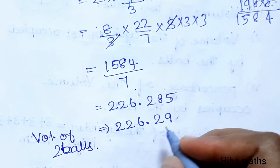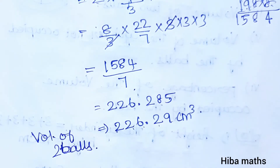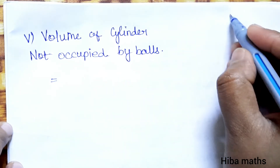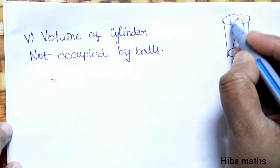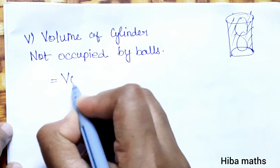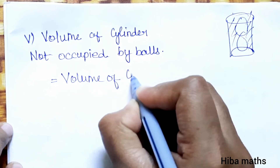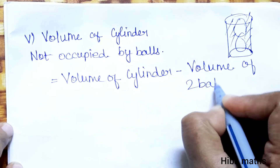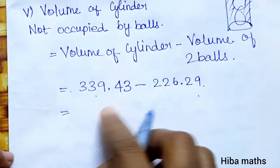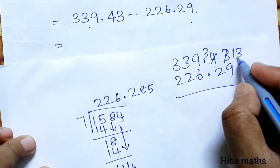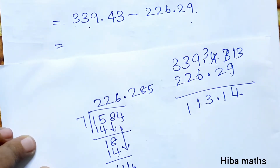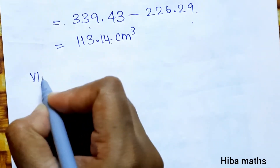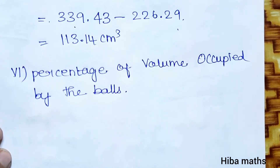Volume of 2 balls = 226.29 cm³. Next question: volume of cylinder not occupied by balls. Volume of cylinder minus volume of 2 balls gives the answer. Volume of cylinder minus volume of 2 balls.